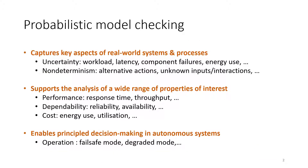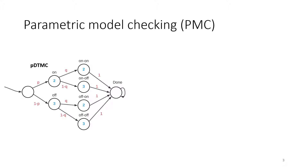Probabilistic model checking is an important technique that can formally verify quantitative properties of a probabilistic model. It can be used to capture key aspects of a real-world system, analyze properties of interest, or support decision-making in autonomous systems. When the probabilities of a model are unknown, they can be replaced by parameters, and we call such a model a parametric model. Checking such models is referred to as parametric model checking. We can also verify different quantitative properties using this model, such as asking what is the probability of reaching states of interest, or what will be the reward value when reaching the final states.